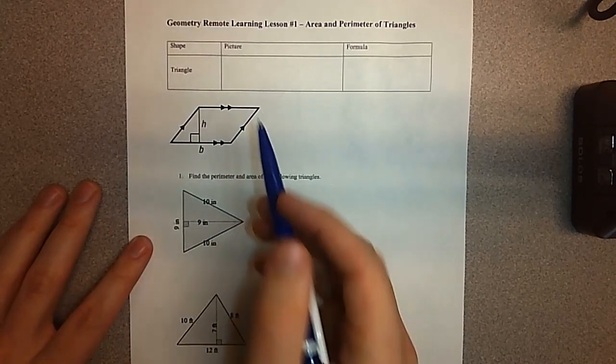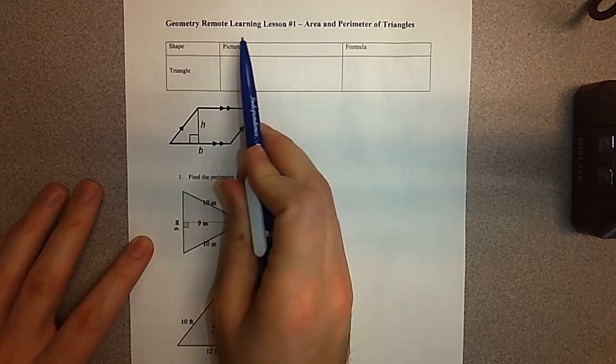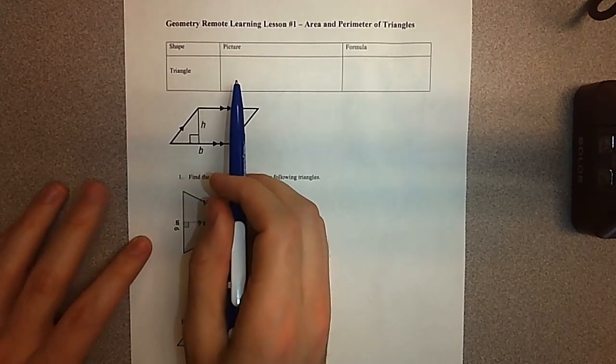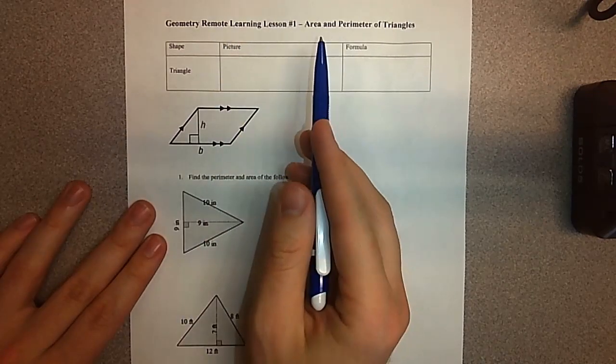Hey everybody, this is Mr. Keeney. This is the first of your geometry remote learning lessons and the first thing we're going to go over is area and perimeter of triangles.